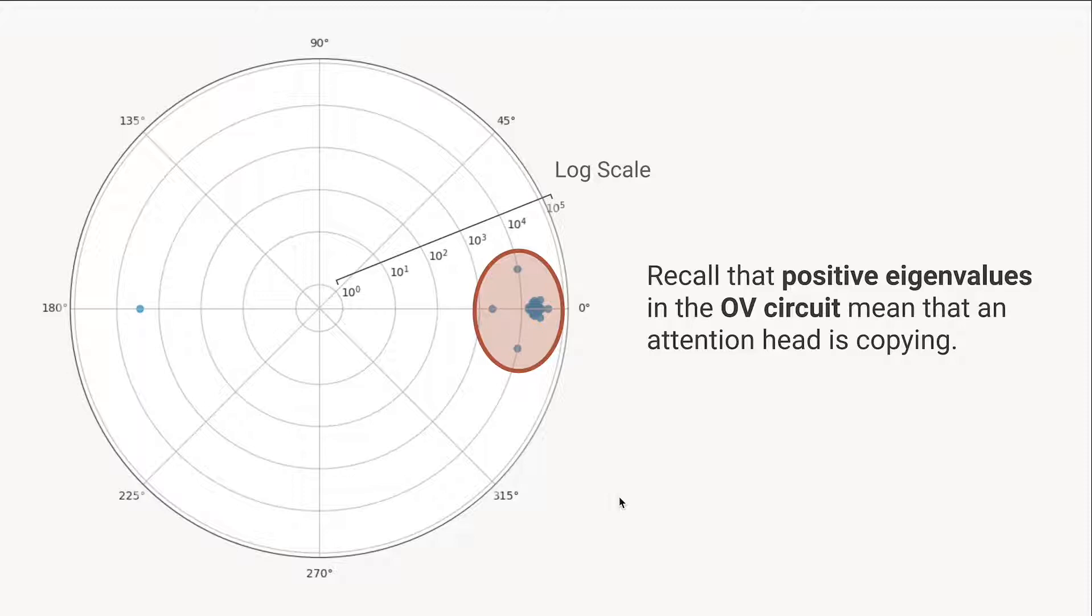If you watched our previous video on eigenvalue analysis, you'll remember that eigenvalues are a nice way to summarize the behavior of attention heads without having to look at them very closely. In particular, positive eigenvalues for an OV circuit mean that an attention head wants to increase the probability that the output is the same. Really, it just means the attention head is implementing copying.